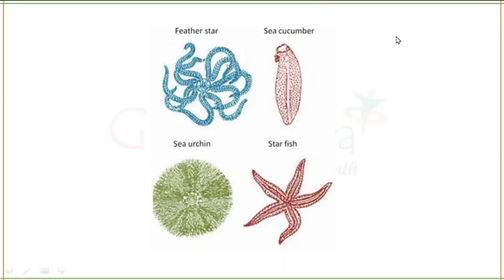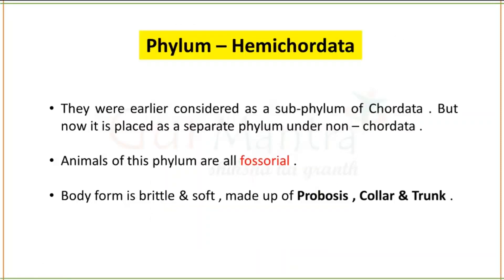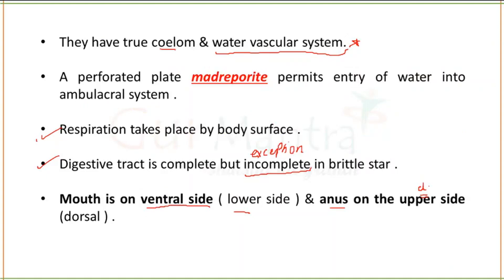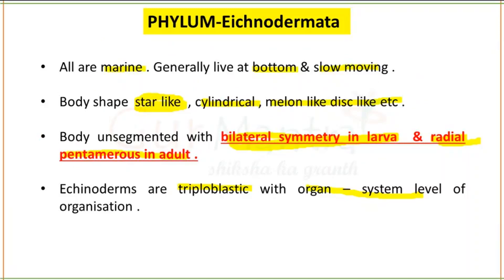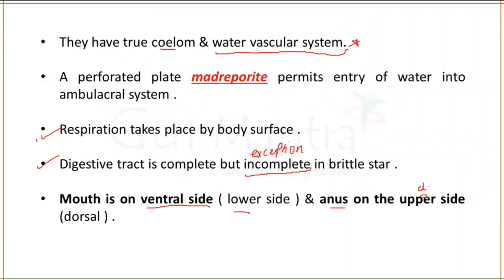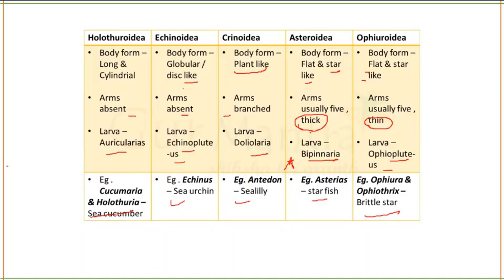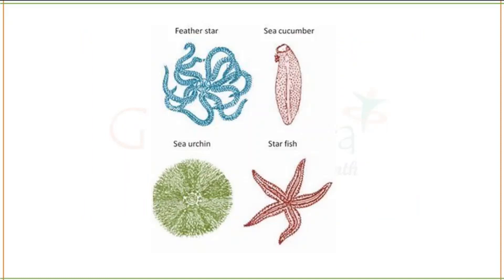This is a very small phylum — Echinodermata as well as Hemichordata. So the first phylum is completed. For a quick revision of Echinodermates: the most important points to remember are bilateral symmetry present in larva and radial symmetry in adult; water vascular system present; autotomy phenomenon present; and the five classes with their larvae and examples.